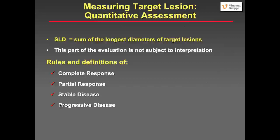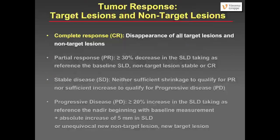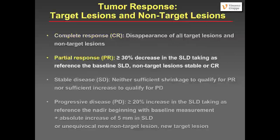How are these four categories defined? A complete response means disappearance of all target lesions and all non-target lesions — no tumor is present anymore — and all lymph nodes which have been measured are now smaller than 10 millimeters. With partial response (PR), you have an at least 30% decrease in the SLD, taking as reference — and this is very important — the baseline. Always the reference is the baseline scan, and the non-target lesions are stable or improved.